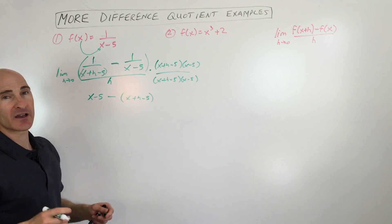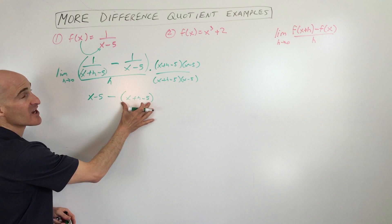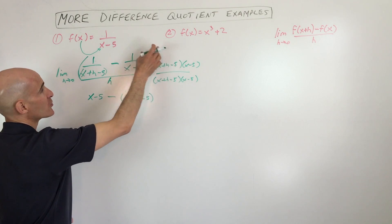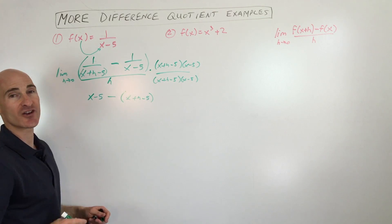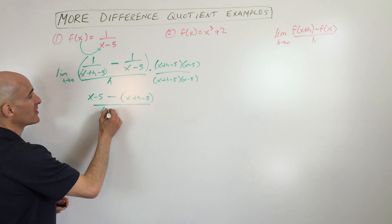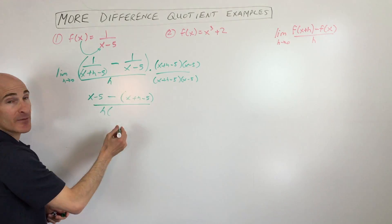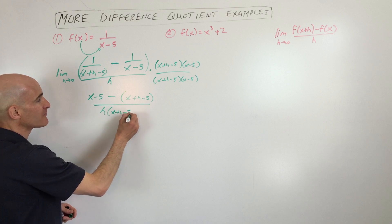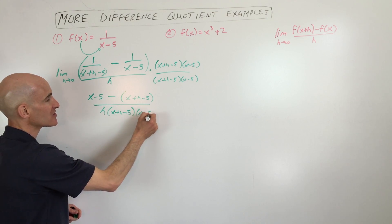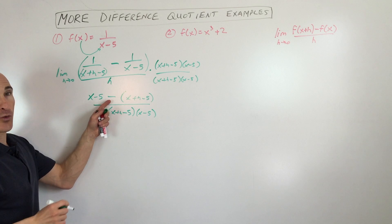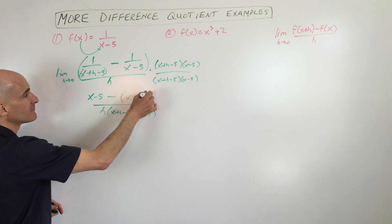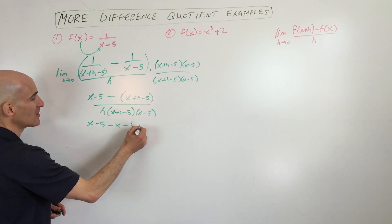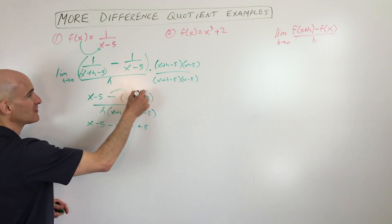Now you want to be careful because when you're subtracting, you're really subtracting this entire thing. Some students forget to put the parentheses. You want to treat this as a group and you're subtracting this entire group. The last step is we're just going to multiply this whole thing times the denominator. Don't foil the denominator — just leave it in factored form, because we're going to get some cancellation. So we distribute this negative: that's going to be (x minus 5) minus (x minus h plus 5).